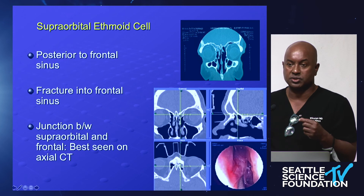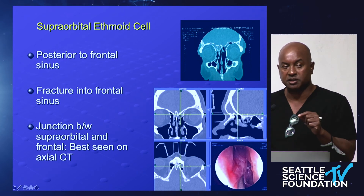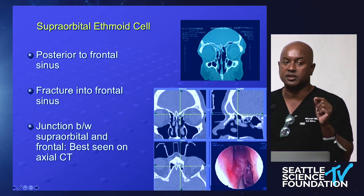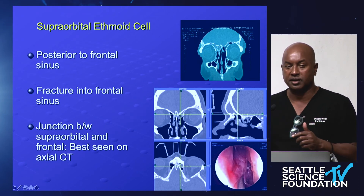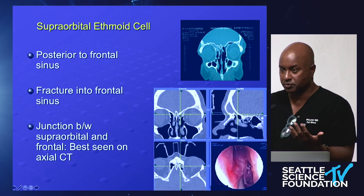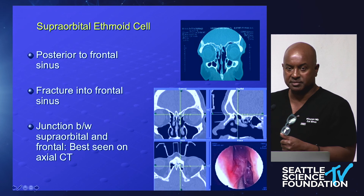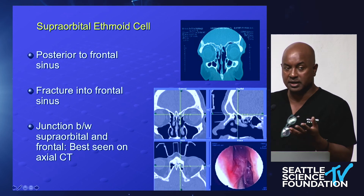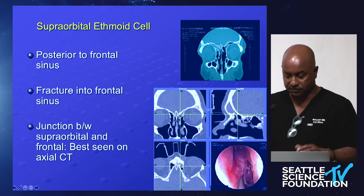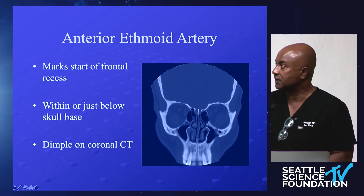The superorbital ethmoid cell is associated with the anterior ethmoid artery, so if you have one, you likely have an exposed anterior ethmoid artery — you must find it to open the superorbital ethmoid cell. In the cadaver lab, if you don't encounter one yourself, look around and see if another specimen has a superorbital ethmoid cell — it is a very common cause for surgical failure.